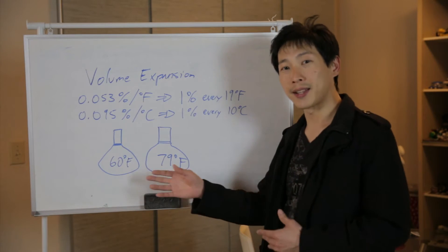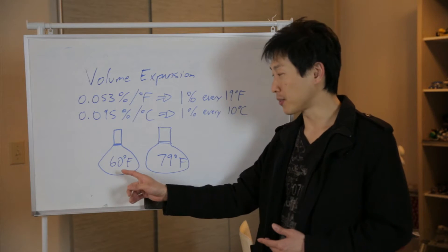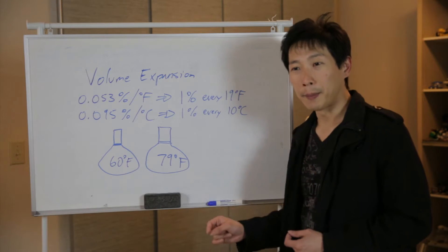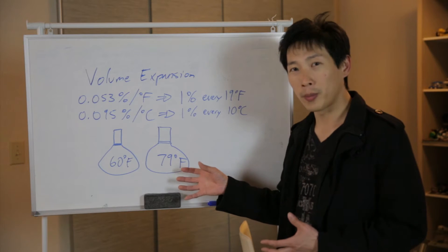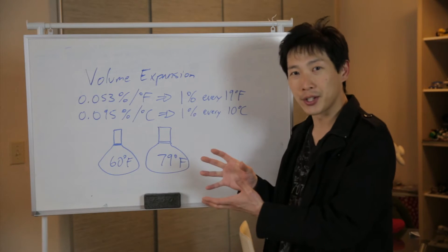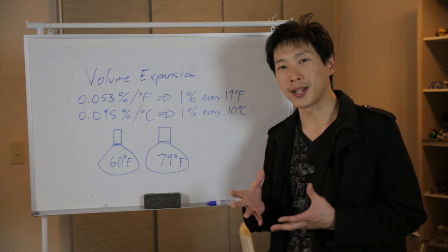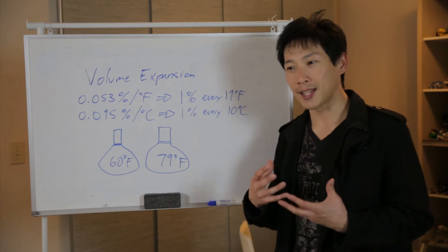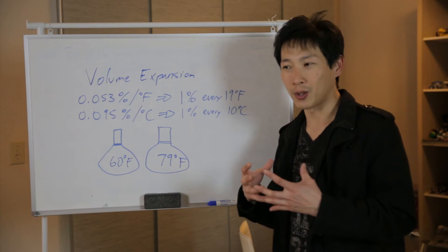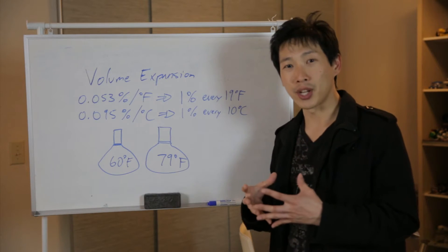So the retailers pay it at a temperature compensated price of 60 degrees Fahrenheit, but then when they sell it to us, it's a little warmer and so it's less dense in energy. So there's this argument that they're selling us something that's not as dense and doesn't contain as much energy.